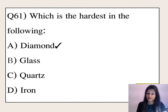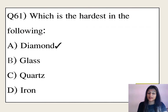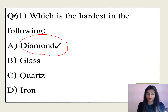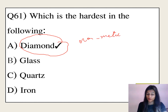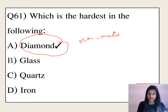First question: which is the hardest non-metal? Diamond is the hardest non-metal. Diamond is one of the exceptions — it is an allotrope of carbon.